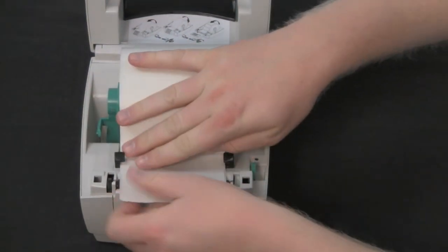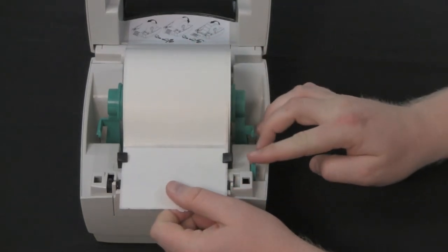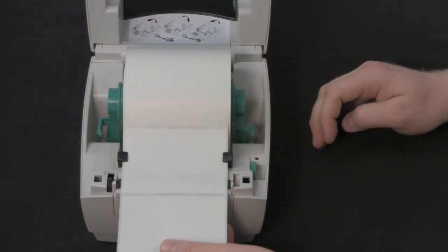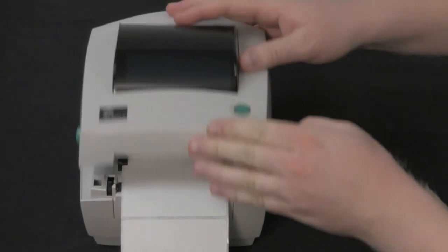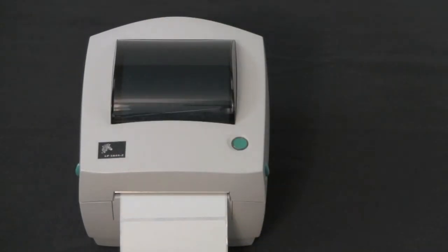Adjust the media guides so they are the same width as the media. Pull labels through the front of the printer, close the lid, and power the printer on.